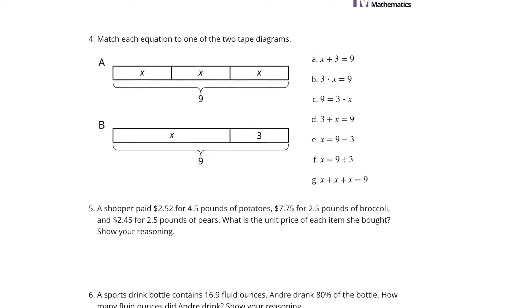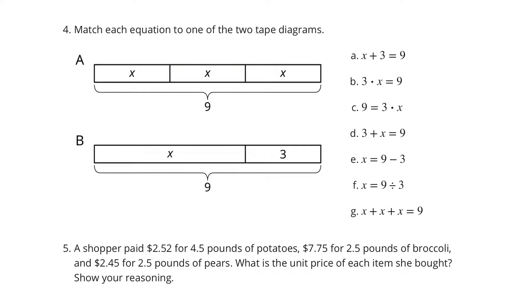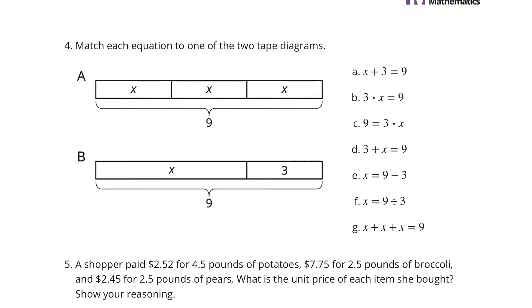Question 4: match each equation to one of the two tape diagrams. We have x plus 3 equals 9 — an x with 3 that equals 9, so little 'a' on my screen goes with big B. Then 3 times x equals 9: 1, 2, 3 x's equals 9 — that's going to be A. And 9 equals 3 times x — that's also A.